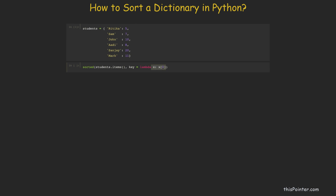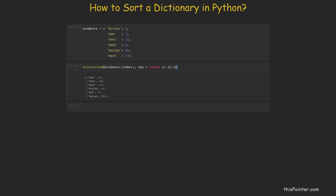The lambda function returns the first entry of the tuple, so it uses the key while sorting the key-value pairs. The sorted function compares each key-value pair using this lambda, which accepts each pair and returns the key — so each pair is compared based on the key only. The sorted function returns a list of key-value pairs sorted by key, with string keys sorted in alphabetical order. To get a sorted dictionary, we pass this list of tuples into the dict() constructor and assign it to the same variable.